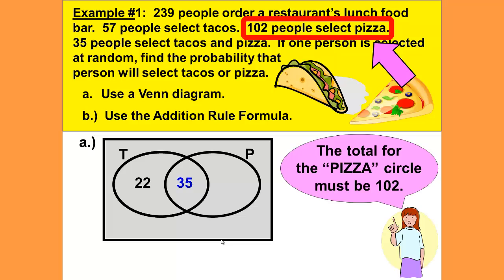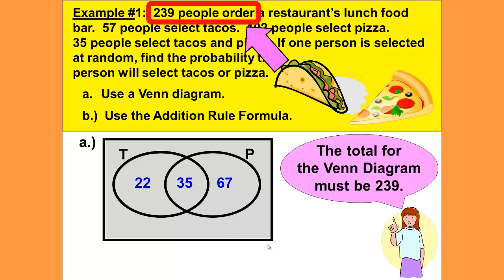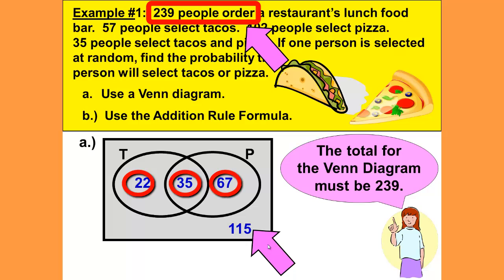102 people select pizza, so the total for the pizza circle must be 102. We already have 35 people in the overlap of the pizza circle. Subtracting 35 from 102 leaves us 67 — 35 plus 67 gives us the total of 102 for pizza. Now there were 239 people that ordered at the restaurant. 239 minus 22 minus 35 minus 67 gives us 115 people who did not order either tacos or pizza — they ordered something else.